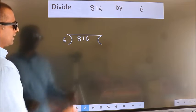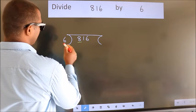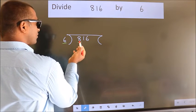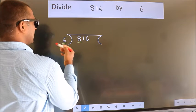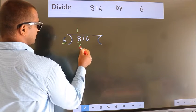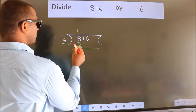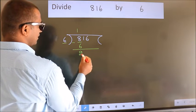Next, here we have 8, here 6. A number close to 8 in 6 table is 6 1s 6. Now we should subtract. We get 2.